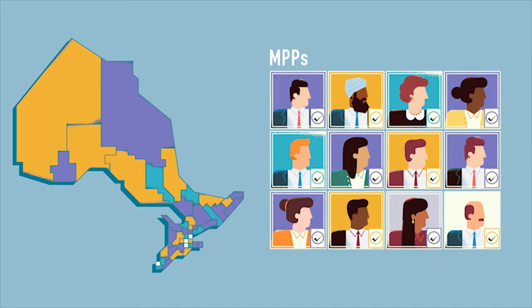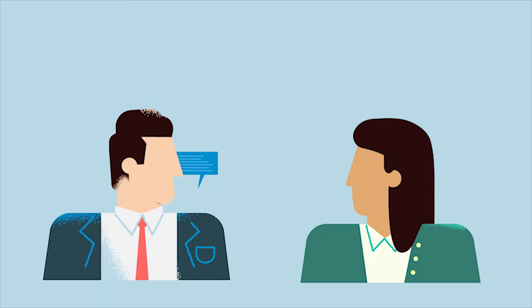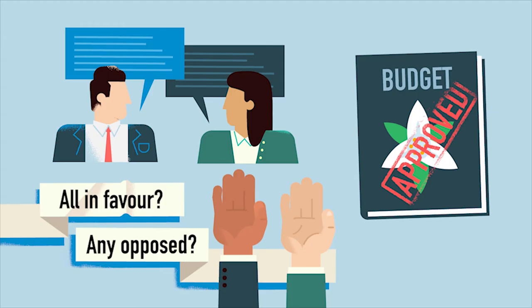MPPs convene at the Legislative Assembly in Toronto. Here, MPPs debate issues, pass laws and legislation, approve finances, and examine government activity.